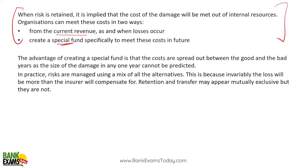From current revenues, you put a part into a fund — your own fund — and maintain a special fund. The advantage is that costs are spread out between good and bad years. You've been doing business for 15 years, saving a little money each year. But a disadvantage of self-retention over insurance: if a big accident happens in the first or second year of starting your fund, what would you do?